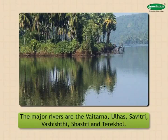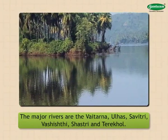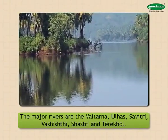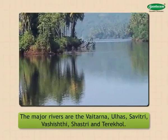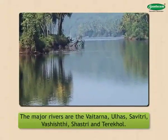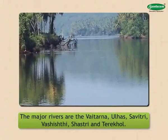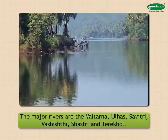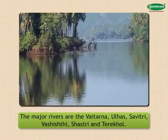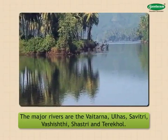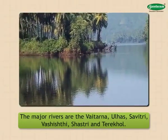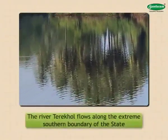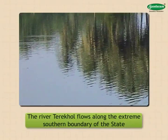These Konkan rivers originate along the western slopes of the Sahyadri mountains and meet the Arabian Sea. Compared to rivers on the plateau region, they travel a very short distance. The western slopes of the Sahyadris are steep, and the courses of rivers also have steep slopes; therefore, rivers in Konkan flow with great speed. This has caused development of estuaries at the mouths of most of these rivers. The river Terekhol flows along the extreme southern boundary of the state.